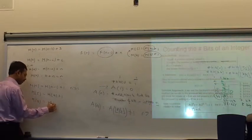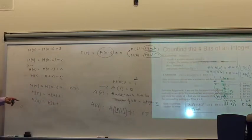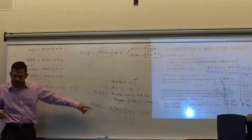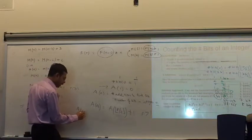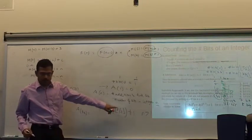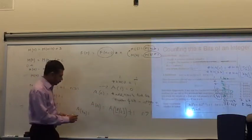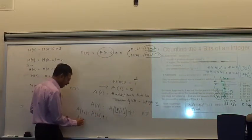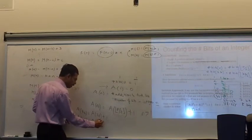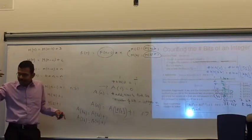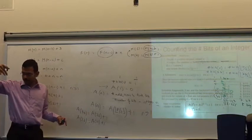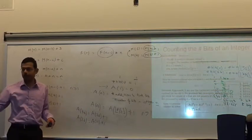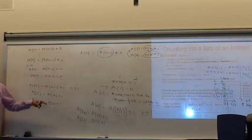In the factorial case, M(5) is M(4) plus 1, and M(4) is M(3) plus 1 — we reduce it 1 by 1, from 5 down to 1. Whereas here, if I apply A(40), it becomes A(20) plus 1, then A(20) is A(10) plus 1. So it's not linear — it's more like exponential. It reduces by half each time. Here it reduces by 1; here it reduces by half.